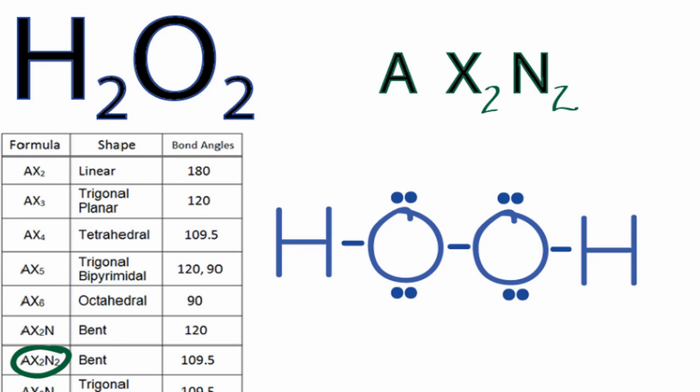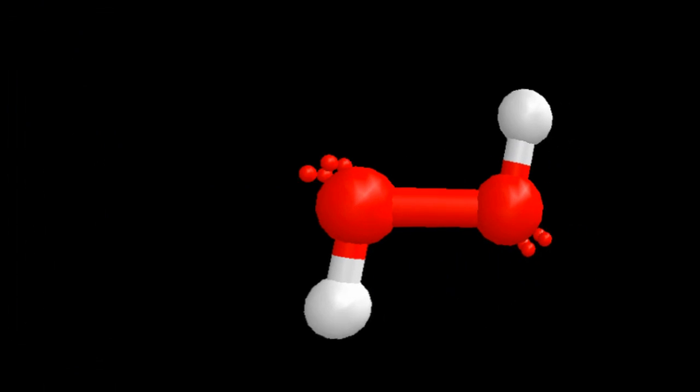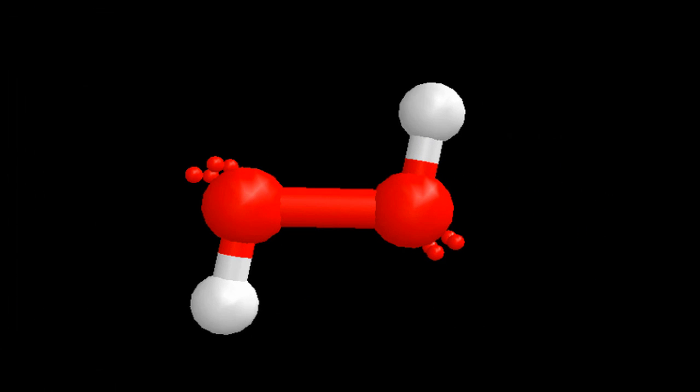Going back to our three-dimensional structure, we can see that it is a bent molecular geometry, and the bond angle right here is 109.5 degrees. Since these two oxygens are symmetrical, this here will also be 109.5 degrees.